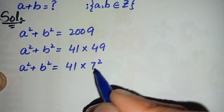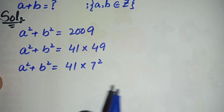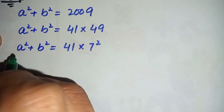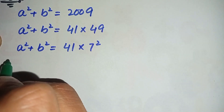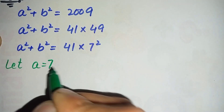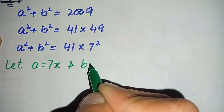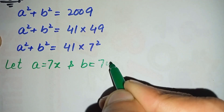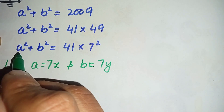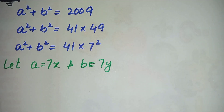In the next step, I will try to eliminate this 7 squared from the right hand side. To do that, I will try to make 7 squared appear in both terms on the left hand side. So let us suppose a is equal to 7x and b is equal to 7y. We will replace a and b with these values in the equation.